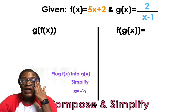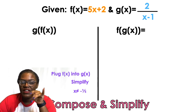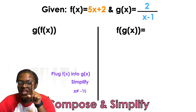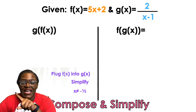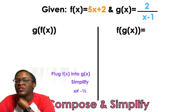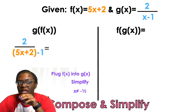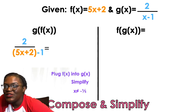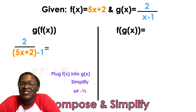Now with a fraction involved. Looking at G of F of x — that means put F inside of G. F is 5x plus 2, so replace the x in G with 5x plus 2. Combining like terms, 2 minus 1 gives 1, so the result simplifies to 5x plus 1. That's the final answer.